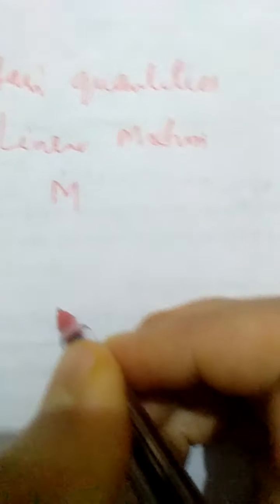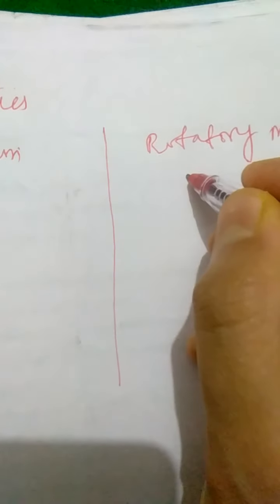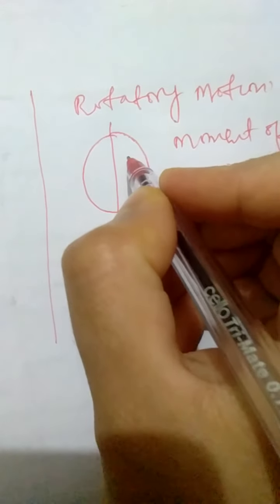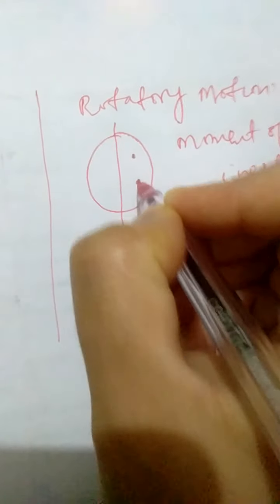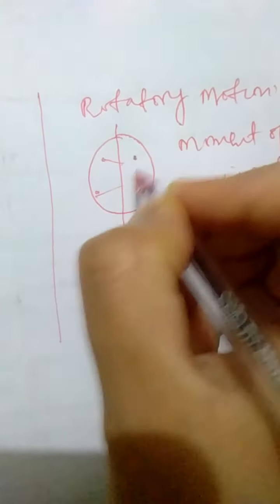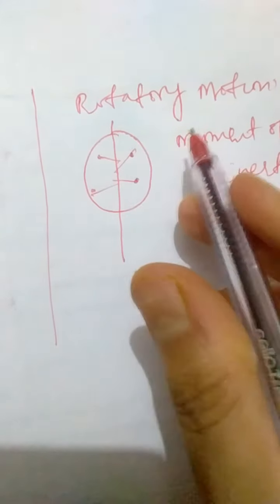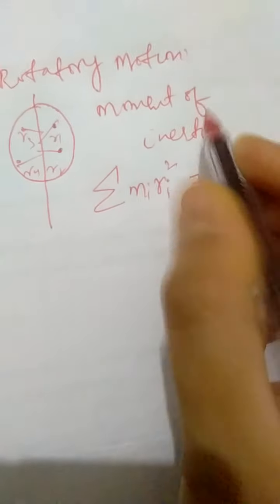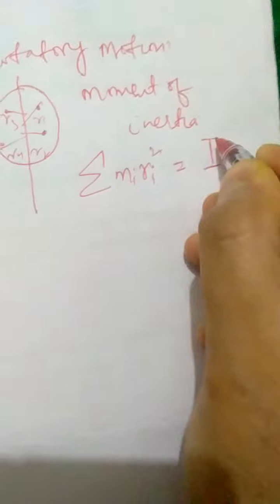Let us begin with simple things. For example, the mass of a body in case of linear motion is simply m. But in case of rotary motion, it is more important to use the concept of moment of inertia. Moment of inertia is the sum total of the products of mass and distance squared of each particle from the axis of rotation. If you have particles with distances r1, r2, r3, r4 from the axis of rotation, then the summation m_i r_i squared is called moment of inertia, written as capital I.